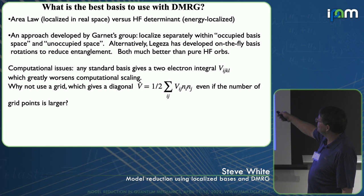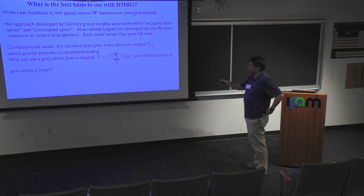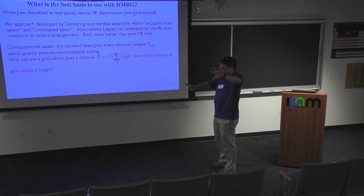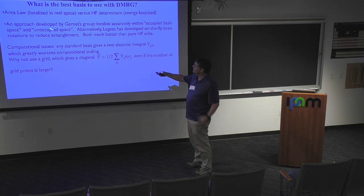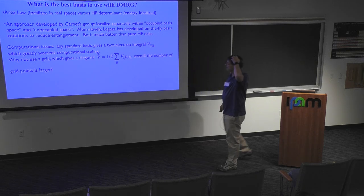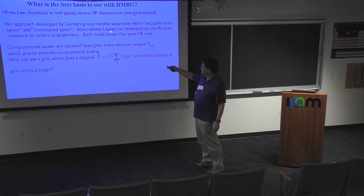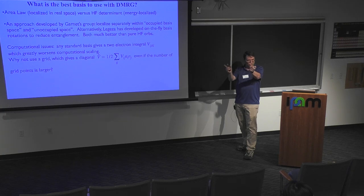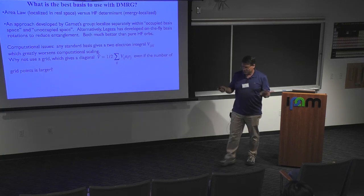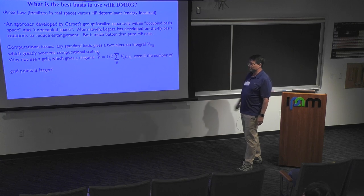What is the best basis to use with DMRG? It's the area law versus the Hartree-Fock determinant. An approach developed by Garnett's group is to localize separately within two subspaces: the occupied states and the unoccupied states, localizing within each separately. That works rather well. Alternatively, Ursh Legeza has developed on-the-fly basis rotations where you directly measure the entanglement and do local rotations to try to optimize it. Both approaches have been much better than just starting with Hartree-Fock orbitals.